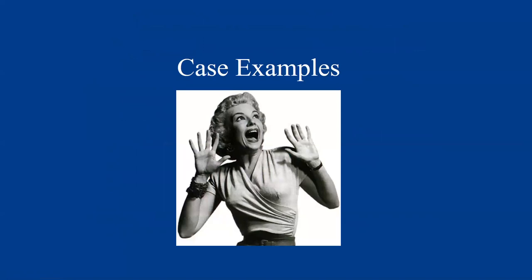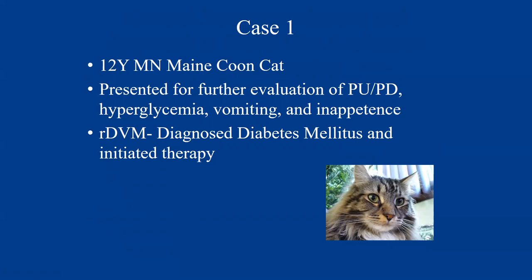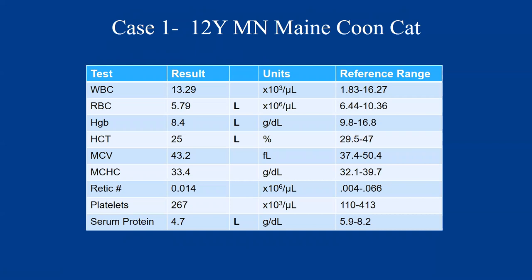Let's go through some case examples. Case one: a 12-year-old male neutered Maine Coon cat presenting for further evaluation of polyuria and polydipsia, hyperglycemia, vomiting, and inappetence. The referring DVM diagnosed diabetes mellitus and initiated therapy. Here is a limited CBC from this patient — the differential is missing. Our white cell count is within the reference interval at about 13,000. Our red cell, hemoglobin, and hematocrit are decreased, so we have an anemia in this patient.